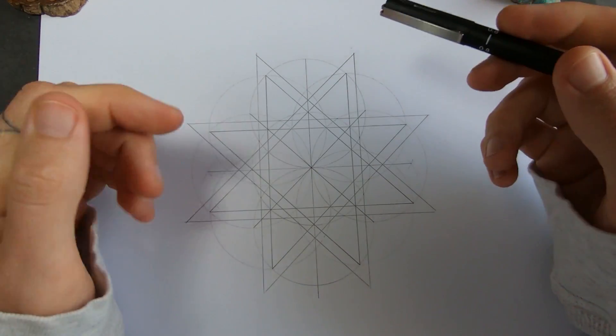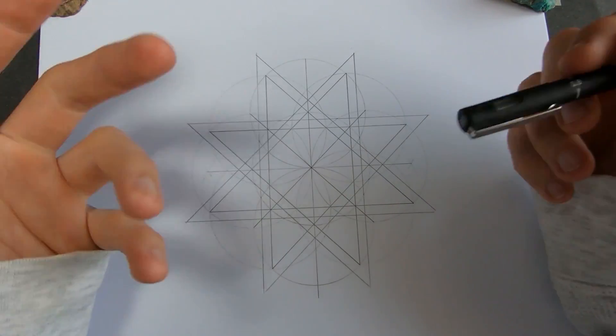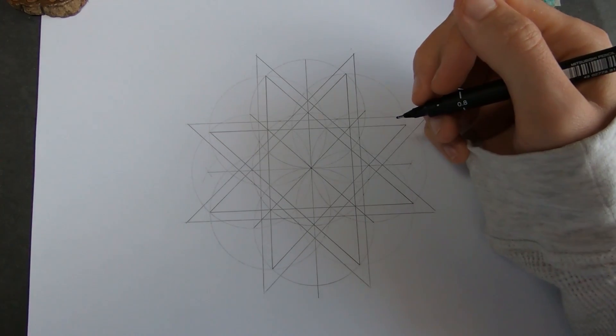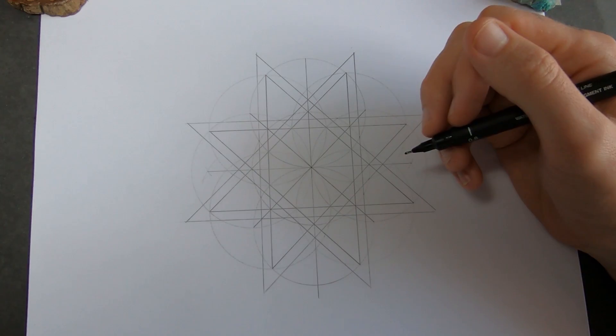And the tricky part here is going to be making sure everything overlaps where it's supposed to overlap. So I'm going to have to concentrate quite a bit for this. Ruler or no ruler? I'm going to go with no ruler. Let's just see how straight I can get these lines.